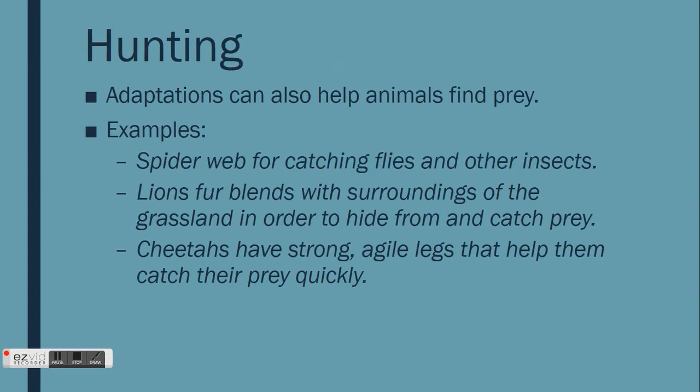Adaptations are not only useful for protection — they are also used to hunt prey for food. For example, spider webs are an adaptation to help spiders catch their prey. The color of the lion's fur helps them blend in with their surroundings so they can hide from and surprise their prey. They also have sharp teeth and claws that make it easier for them to kill and eat their prey. The fastest animal in the world, the cheetah, has strong and agile legs. These adaptations help them catch prey very quickly and easily.